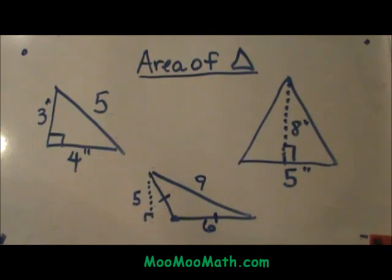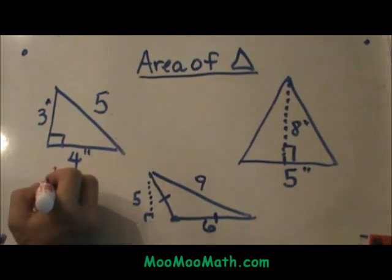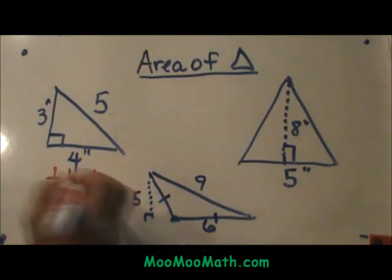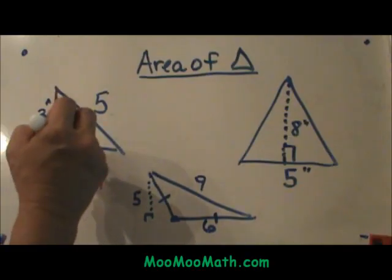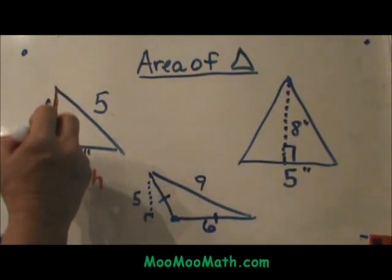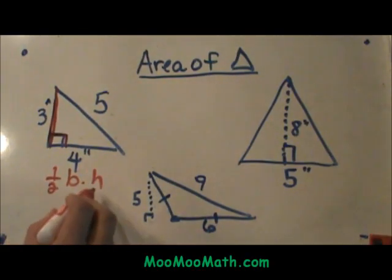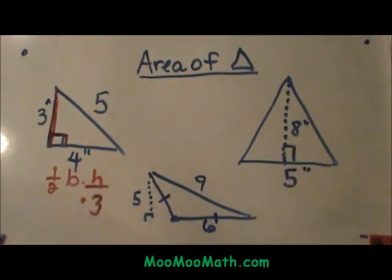When you have a right triangle, the one half base times height formula is so simple. Let's do that first. We have this side of three. Notice we have a right angle here. That means that is the same thing as my altitude or height. Three is my height. I am going to plug in three for H.